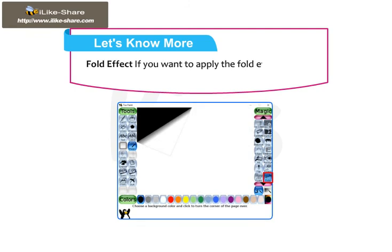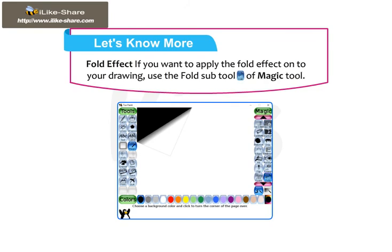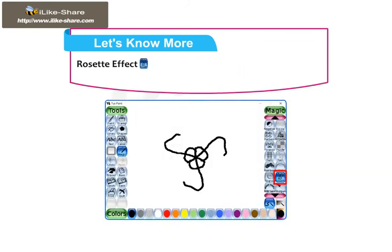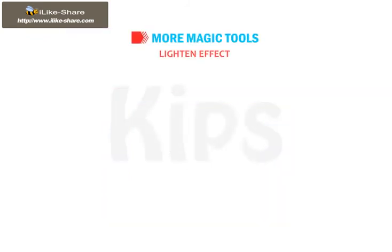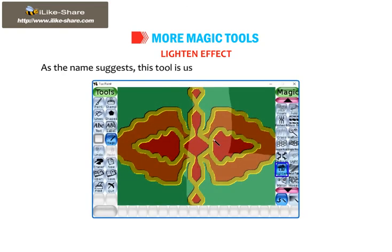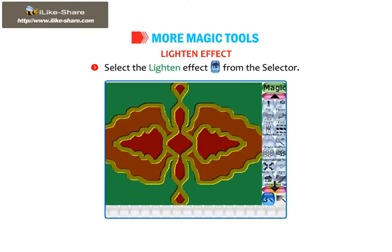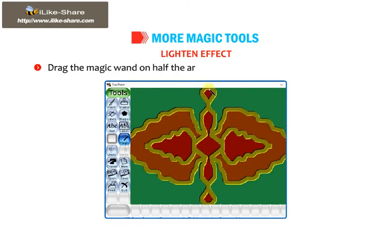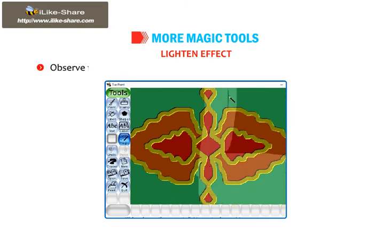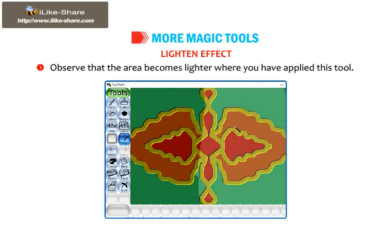If you want to apply the fold effect onto your drawing, use the fold sub-tool of magic tool. This magic tool is used to draw a pattern in the shape of a rose. Let me tell you about the lighten effect now. As the name suggests, this tool is used to lighten the color of any object. Select the lighten effect from the selector. Drag the magic wand on half the area of an object as shown in the figure. Observe that the area becomes lighter where you have applied this tool.